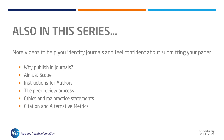For more ideas to help you identify journals and feel confident about submitting your paper, read through our full expert guide to journal publishing and watch the other videos in this series, which look at why we publish in journals, the aims and scopes, instructions for authors, the peer review process, ethics and malpractice statements, and citation and alternative metrics.